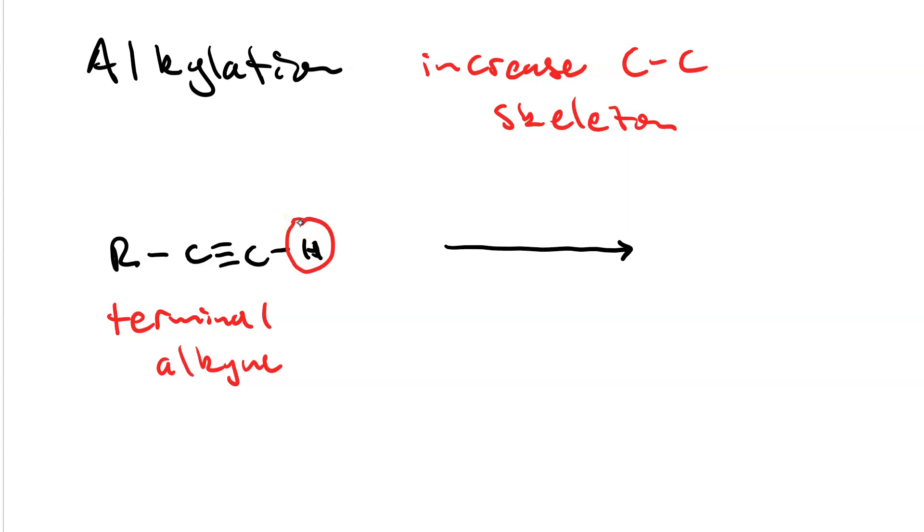Alkylation increases the carbon-carbon skeleton. This is a new and very powerful tool that we have not seen before. The substrate for alkylation is a terminal alkyne. First it's treated with NaNH2 to deprotonate the terminal alkyne and make the alkynide ion which is the strong nucleophile for our second step.